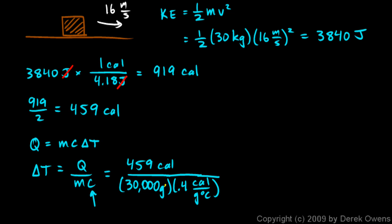Now let's watch the units. Grams here cancels and calories cancels, and we're left with degrees Celsius. Our answer is going to be 459 divided by this product, 30,000 times 0.4. And when we do that we end up with 0.038 degrees Celsius.